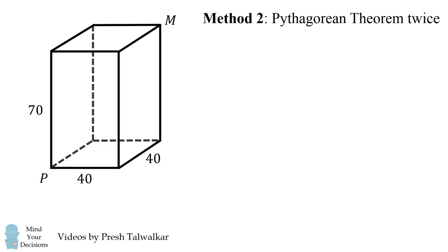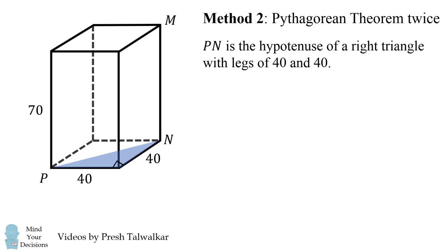Another way to solve this problem is to use the Pythagorean theorem twice. In the base square, label point N opposite the corner of P. This makes a right triangle with two legs of 40. PN is the hypotenuse of this right triangle, so we can calculate the length of PN as the square root of 40² + 40², which equals 40√2.